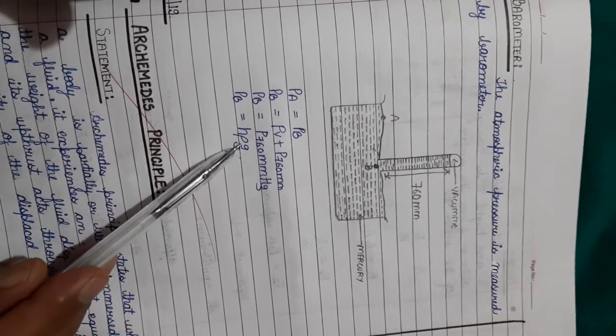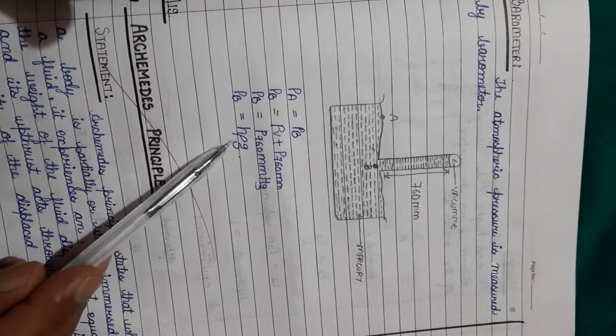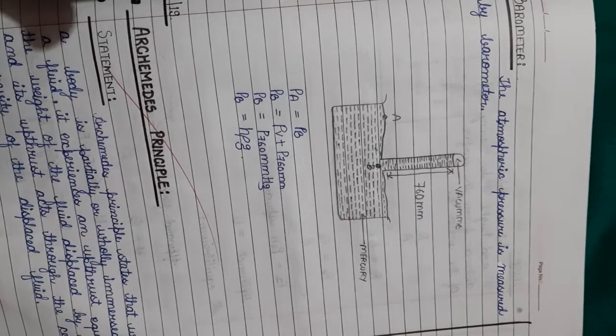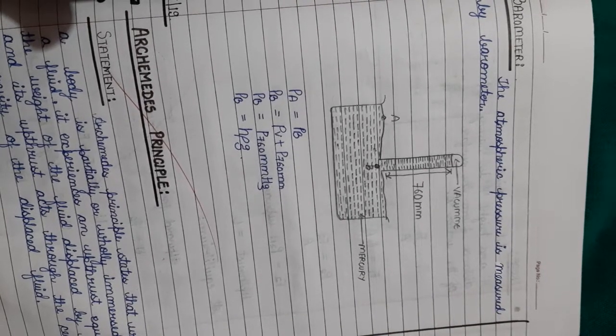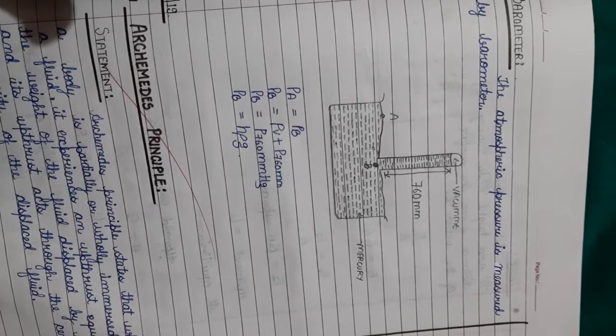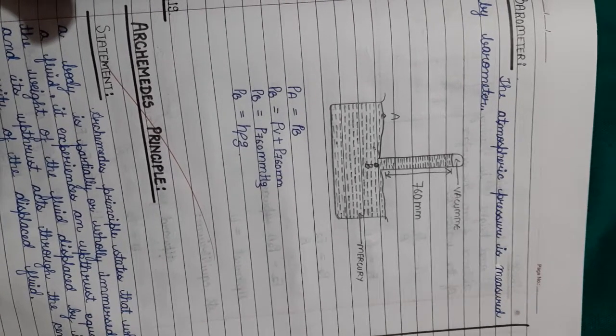This means by measuring the height of mercury in this column, you can measure the pressure at that place. That is all. Thank you and have a great day. Next you have to study about Archimedes' principle.